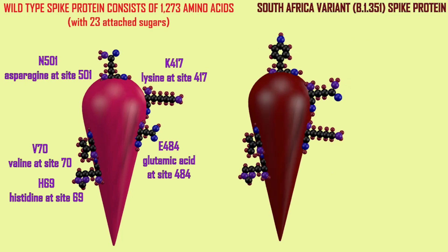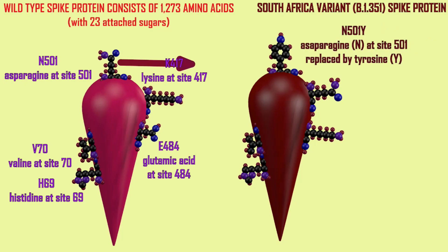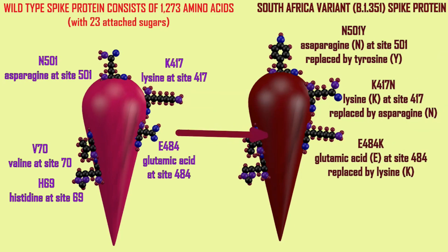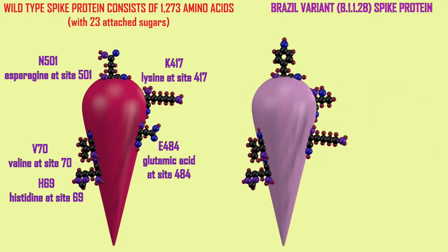Other variations were observed in a strain first identified in South Africa, but now known to be in the United States and other parts of the world as well. The deletion present in the UK strain is not present. However, the change at site 501 from asparagine to tyrosine is present, and there are additional changes in the spike protein. The lysine at site 417 is replaced by asparagine, and the glutamic acid at site 484 is replaced by lysine.